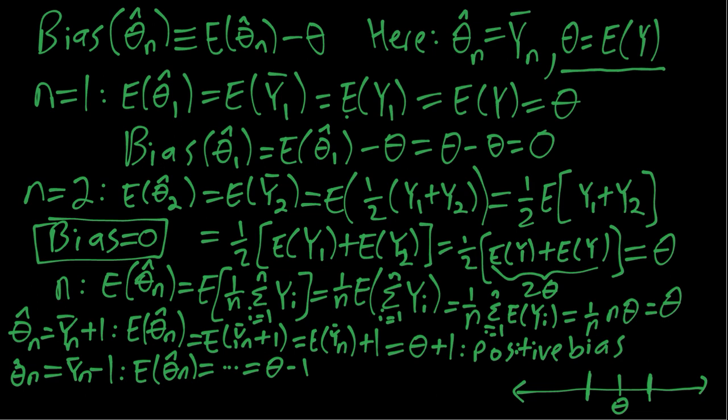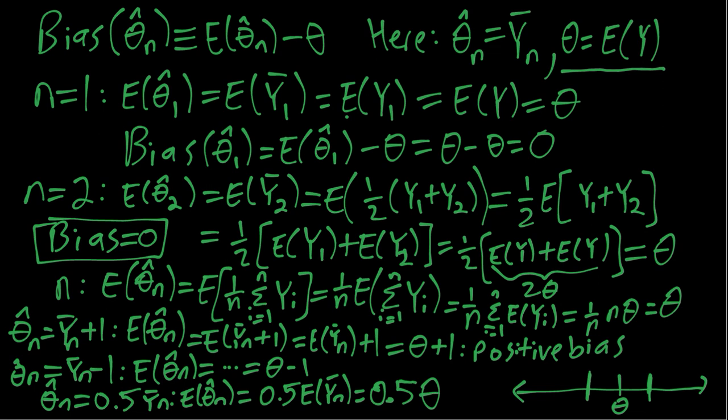And as the last example, if you imagine our estimator is 0.5 times the sample mean, then the mean of our estimator, which above we saw was equal to theta, so we'll get 0.5 times theta. So this is an example of attenuation bias, because in this case our estimator on average isn't always above theta or below theta, it's just closer to 0 than theta.